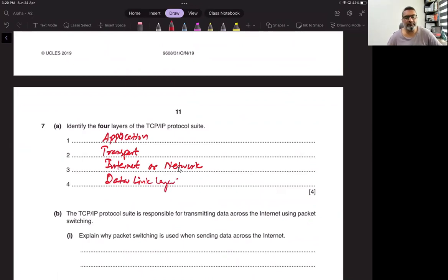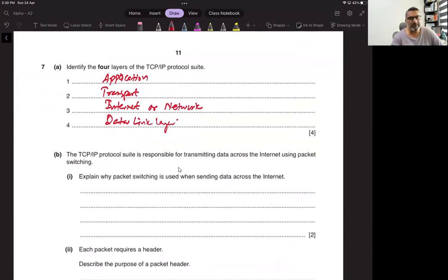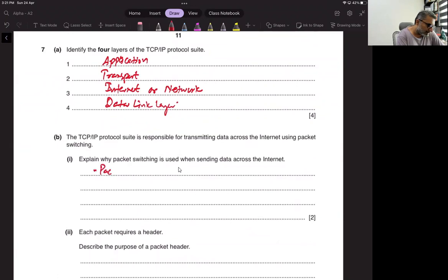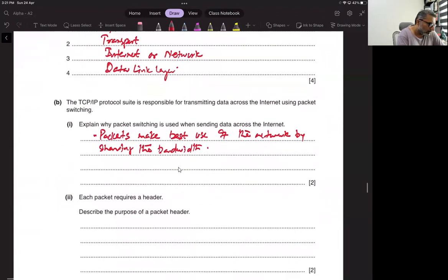The TCP IP protocol suite is responsible for transmitting data across the internet using packet switching. Explain why packet switching is used when sending data across the network. Packets make best use of the network by sharing the bandwidth. Packets may use different routes for the most efficient routing.